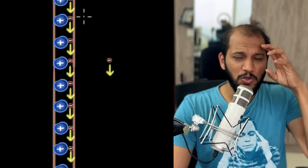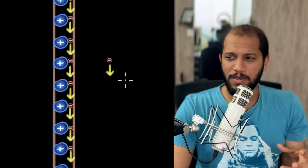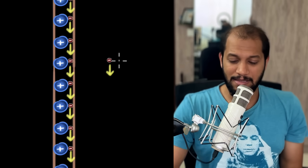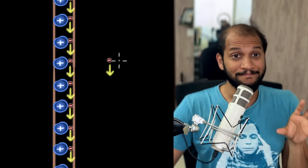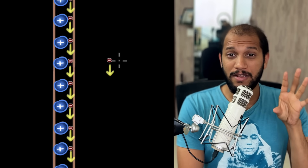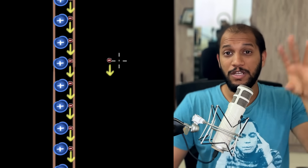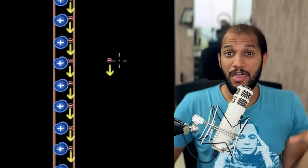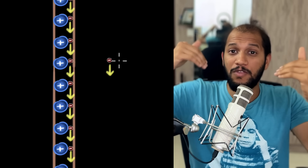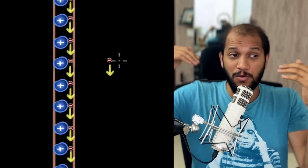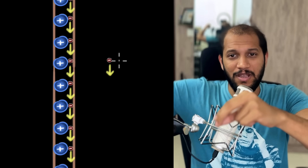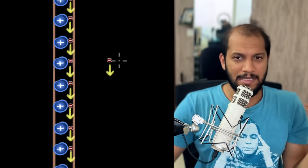So I go back to Einstein and say: the whole wire is neutral, electric force cannot explain this. And Einstein comes back and says: Mahesh, remember — we want to calculate the force on the moving charge. Therefore we need to look at things from the perspective of the moving charge. In other words, we need to jump into the moving charge's reference frame to see what's really going on.